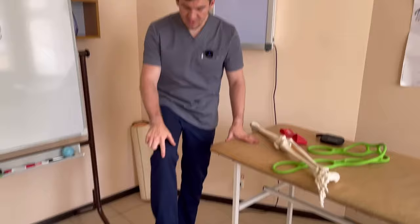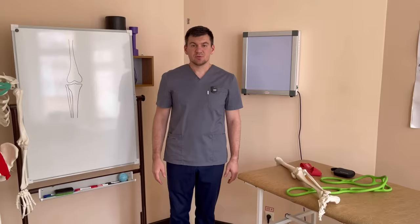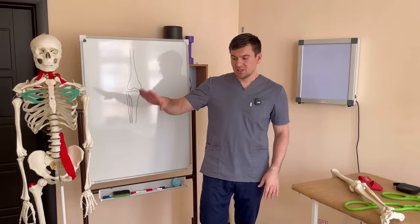The first pain is right here in front, on the knee itself, in the area of the kneecap — a little lower or a little higher. The second is the pain right here on the inner part of the knee joint. Most often they occur during movements — during a step, during squatting, when you sit on a chair and stand up, under load, on the stairs when you go up or go down.